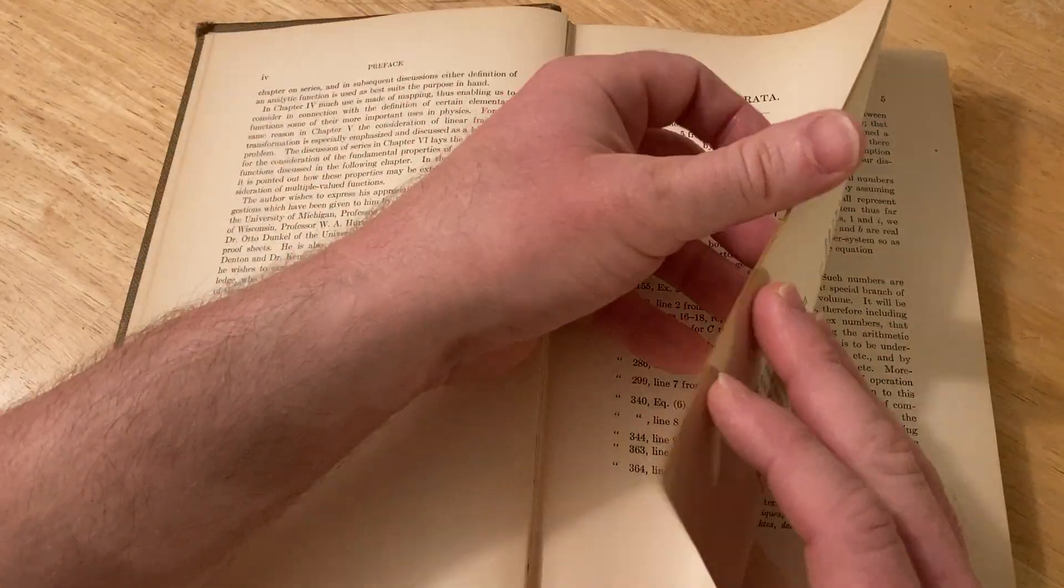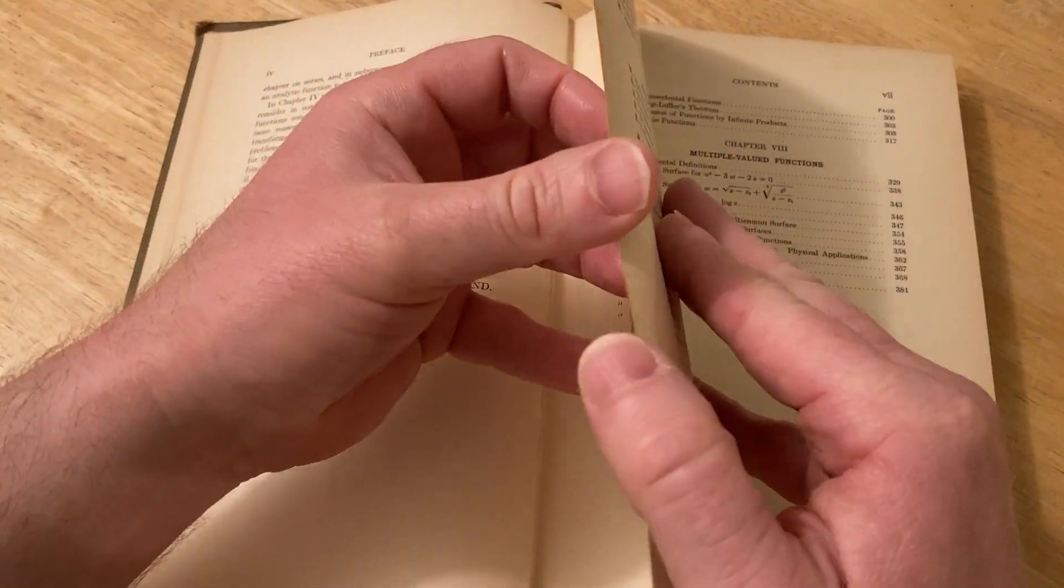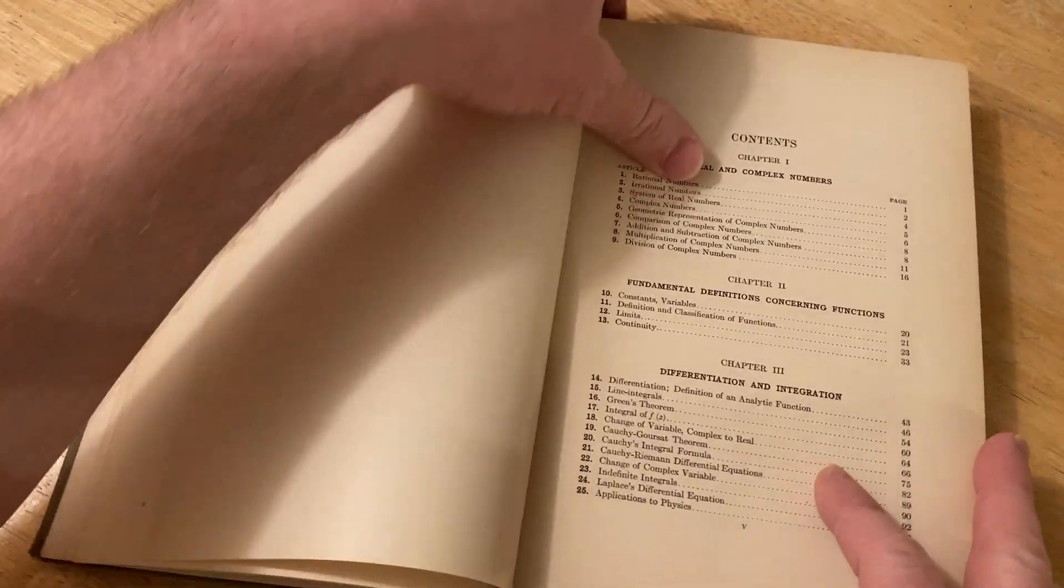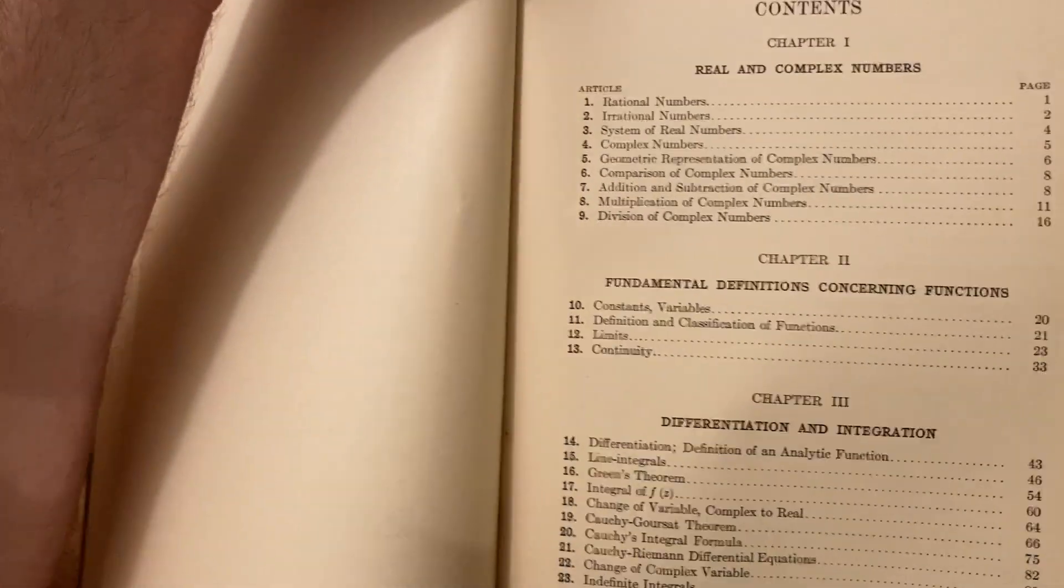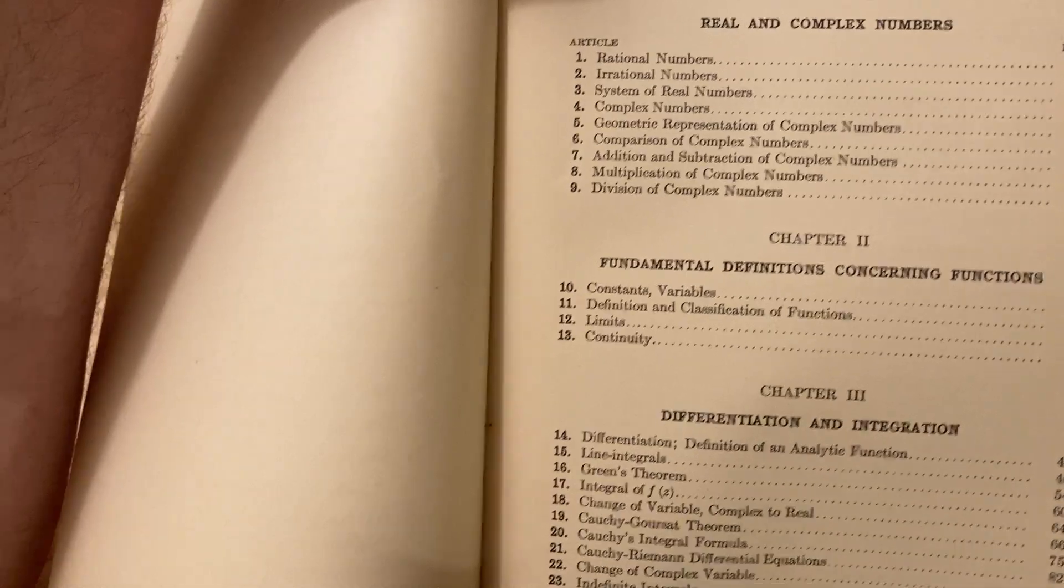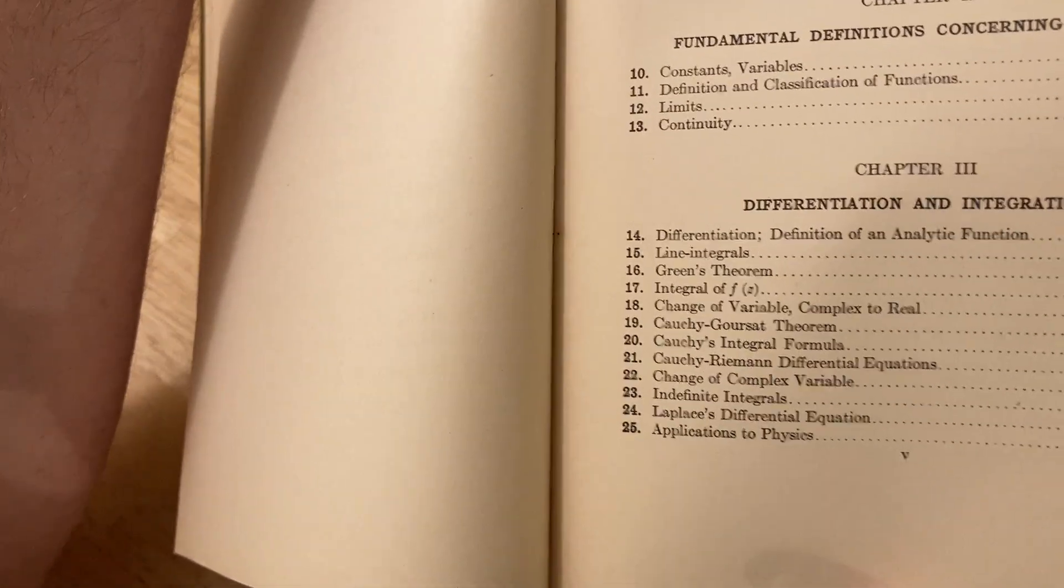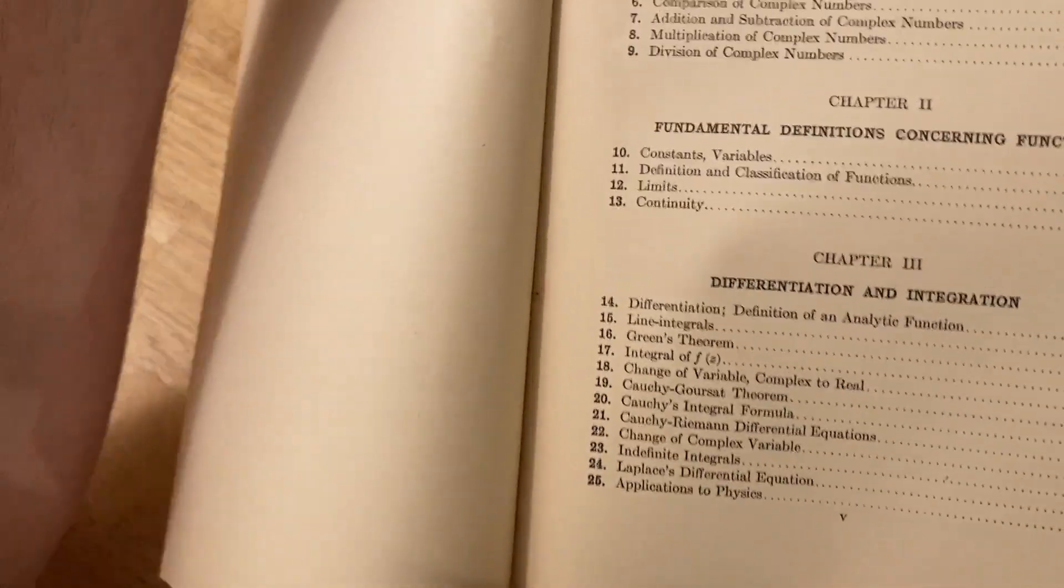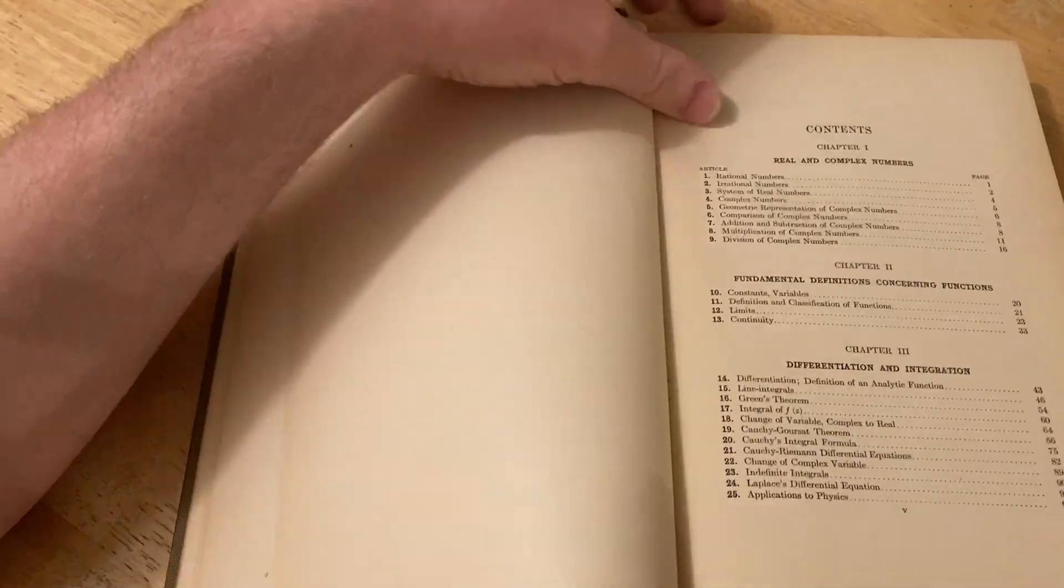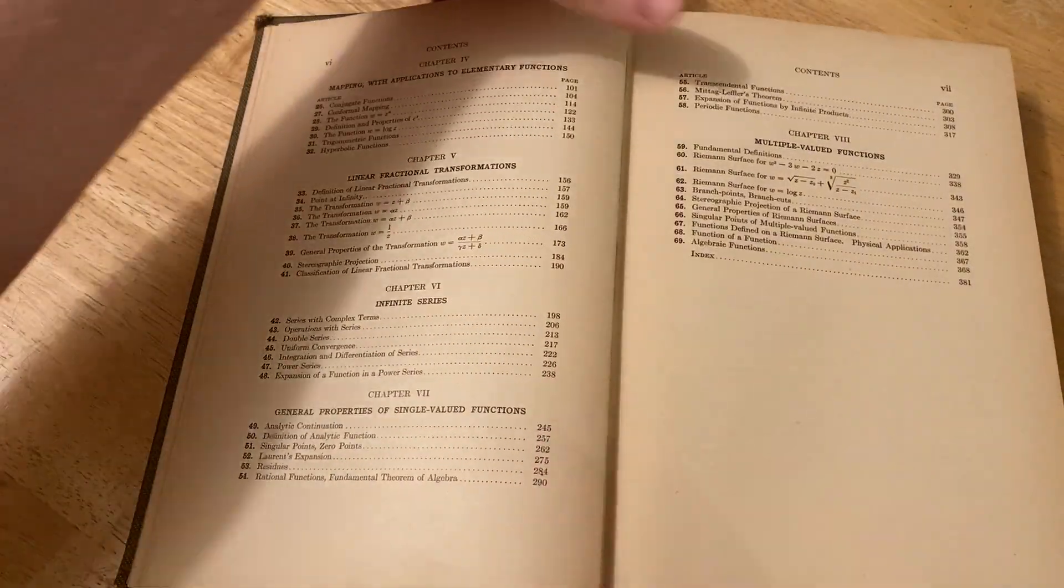Let's look at the contents. So it's a very dense book. It starts with real and complex numbers, then fundamental definitions concerning functions, and then differentiation and integration. These are things that you would typically do in a complex variables course, even at the undergrad level. So it does have undergrad topics.